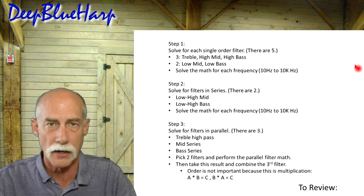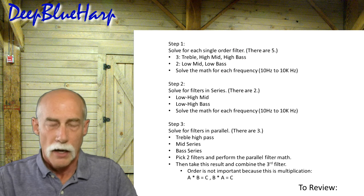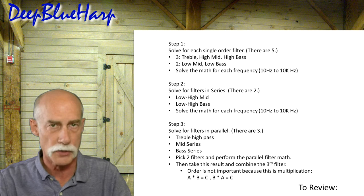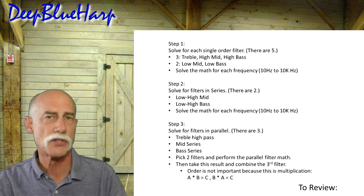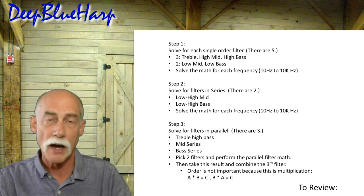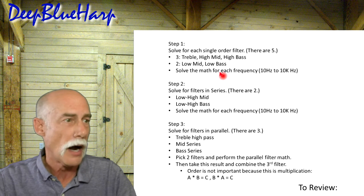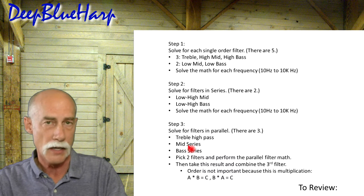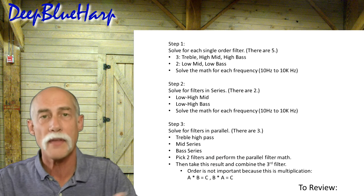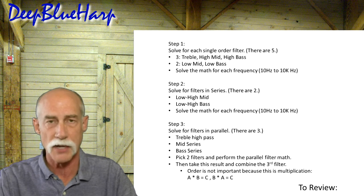Stepping through the calculations comes down to three basic steps. First, solve for each single-order filter — there are five: three high-pass ones for treble, mid, and bass. Second, solve for the filters in series — there are two: a low-high-mid series and a low-high-bass series. Third, combine each of those filter groups in parallel with one another. Pick two to start — I'd take the treble high-pass and do parallel calculations with the mid series, then combine the bass series with that result. It doesn't matter which two you pick first because multiplication is commutative.